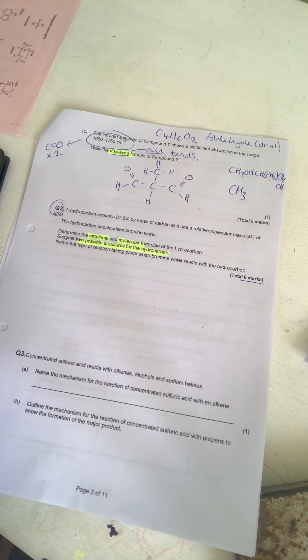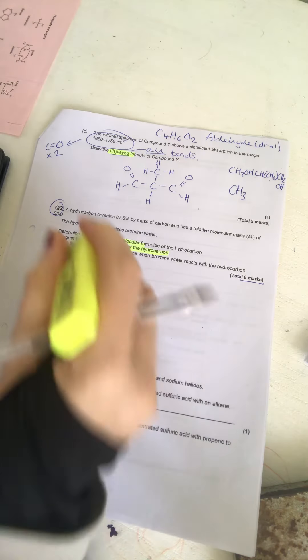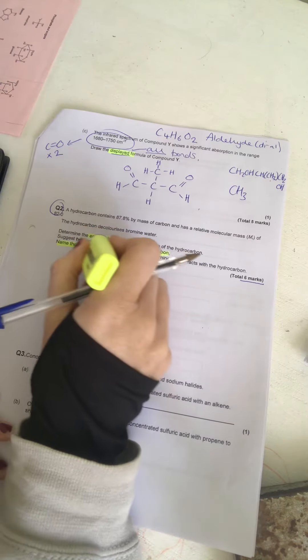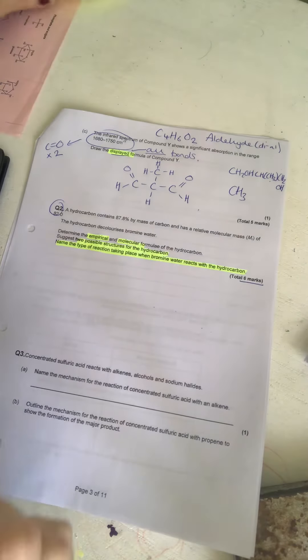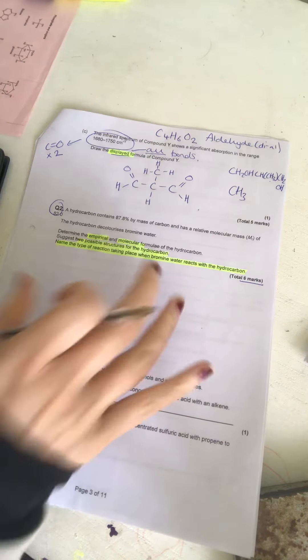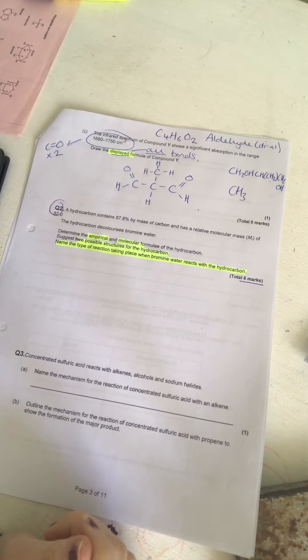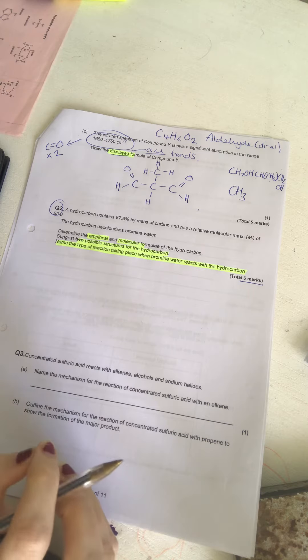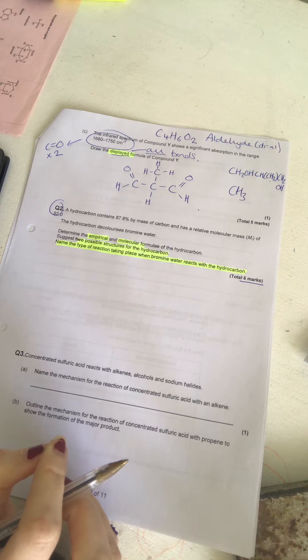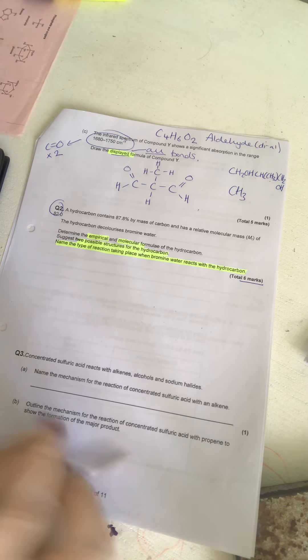And then finally, the reason why there's so much weighting to this question is name the type of reaction taking place when bromine reacts with the hydrocarbon. Actually not a massive space to do this, so I will try and be, you would get more space than this. But anyway, there's a lot to this question, so the first thing to know is it's important to...